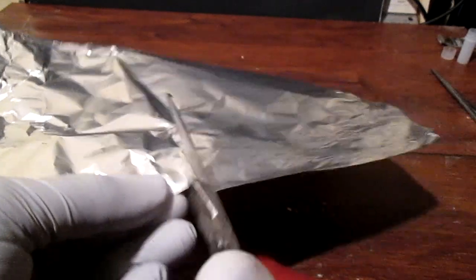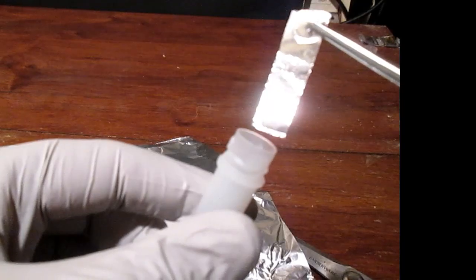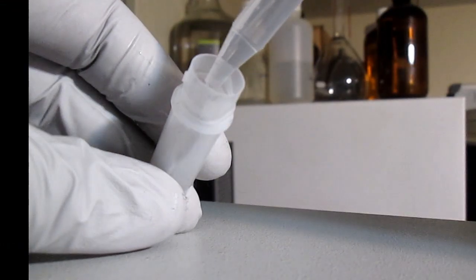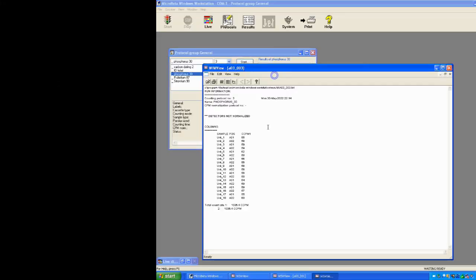So I cut two pieces of aluminum of equal size. This one I placed in the scintillation vial with the scintillation cocktail and measured the background for 10 minutes, 10 times.